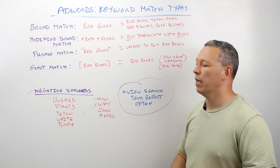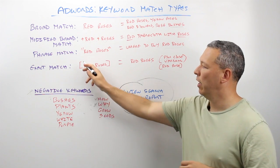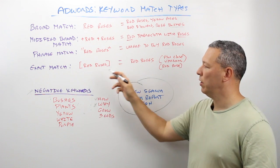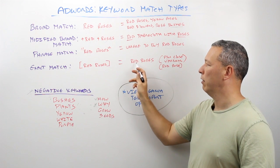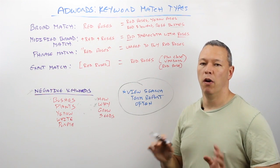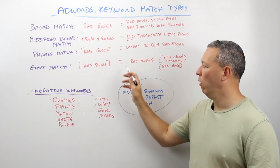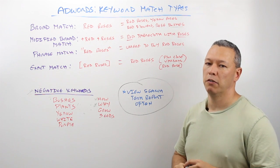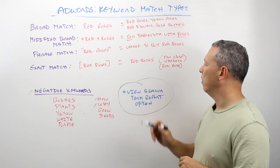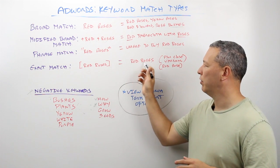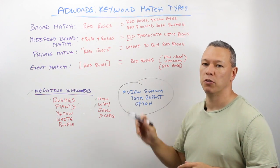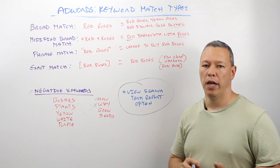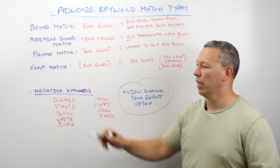The next one is exact match, and that's the most rigid of all the match types. You put the keyword in brackets, and what that means is: only show my ad if somebody types in exactly 'red roses' — no other order, no other words, only those two words. That's the strictest type. They do take some license with it through close variants, which is a recent change — so 'red rose' in singular could trigger your ad, or if someone makes a misspelling and Google knows what they meant, they may still show your ad.